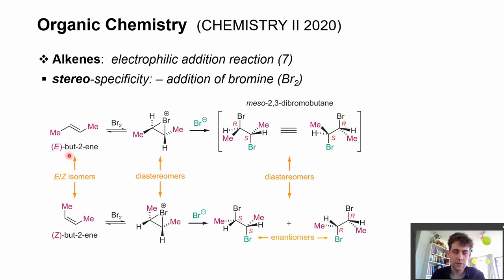This whole stereospecificity comes from this two-step approach. First, to recap, the attack of the bromine molecule from the bottom, where the bromine atom first acts as an electrophile. Then in the second step, we have the attack from the bottom where the bromide anion is used as a nucleophile.